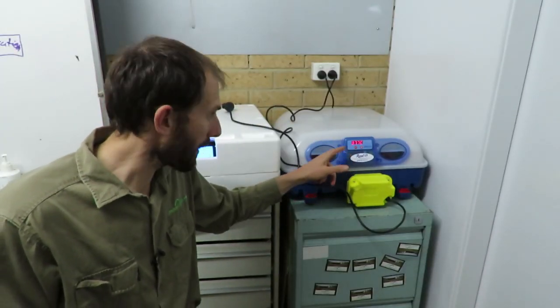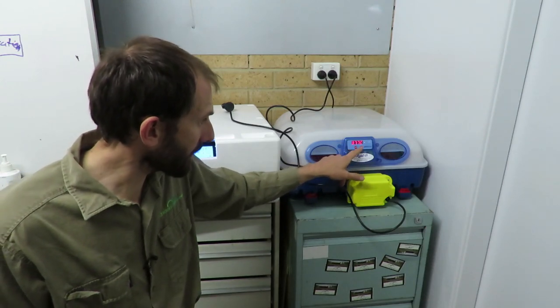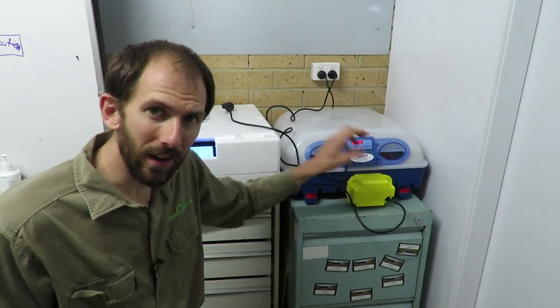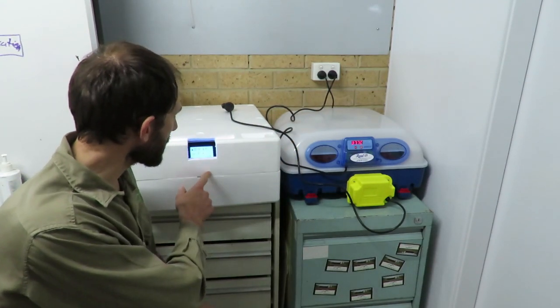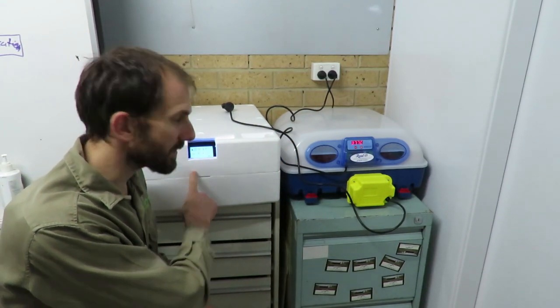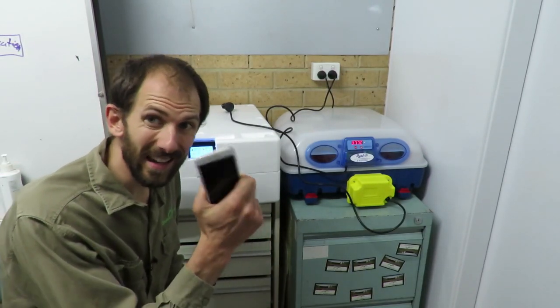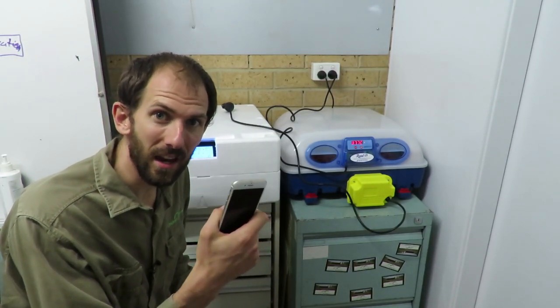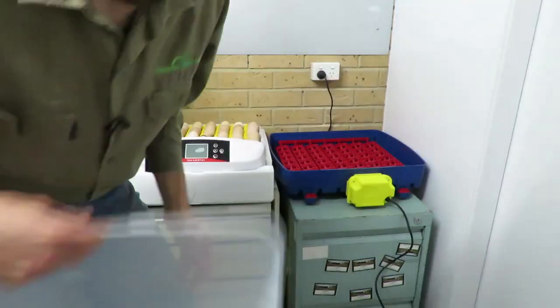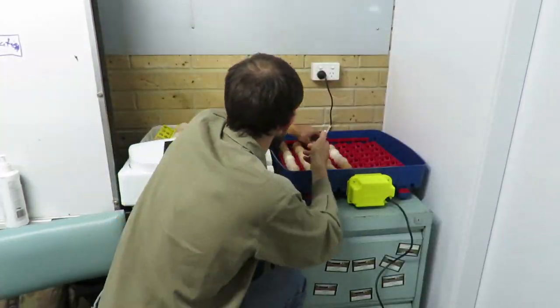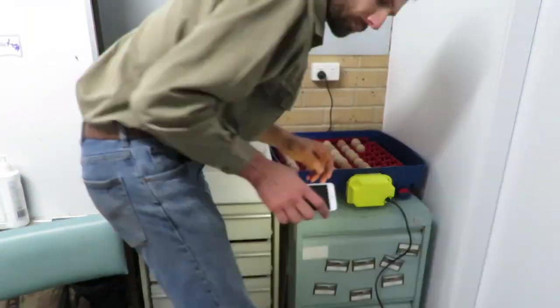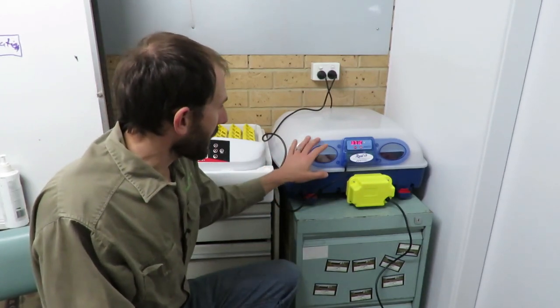So the Borotto incubator is now up to the right temperature, 37.7, the orange light is blinking, that means the temperature's right. So this incubator, I'm going to transfer all the eggs from this incubator to that one, and on the way I'm just going to candle them, so in case there's any that look like they haven't developed, I'll take them out, so we'll now let that just stabilize.